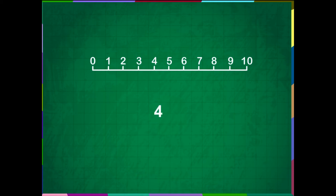Let us subtract 4 minus 3 using this number line. To find the difference of 4 minus 3, we start at 4 and jump 3 times to the left. What number did we reach? We reached number 1. So, the difference is 1.